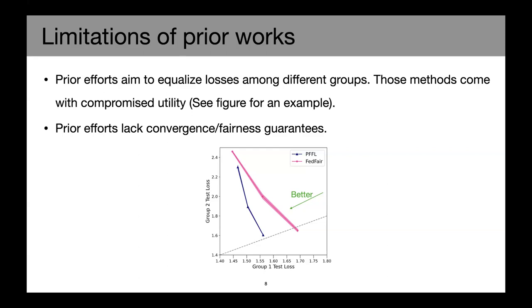This dotted line over here shows the scenario where the two groups have the same test loss. As an example, despite we see that those prior methods such as FedFair is able to achieve equal prediction quality for both groups, it has much worse both group one and group two test loss compared to our method, which is this blue line PFFL. And also those prior efforts also usually lack convergence and fairness guarantee.